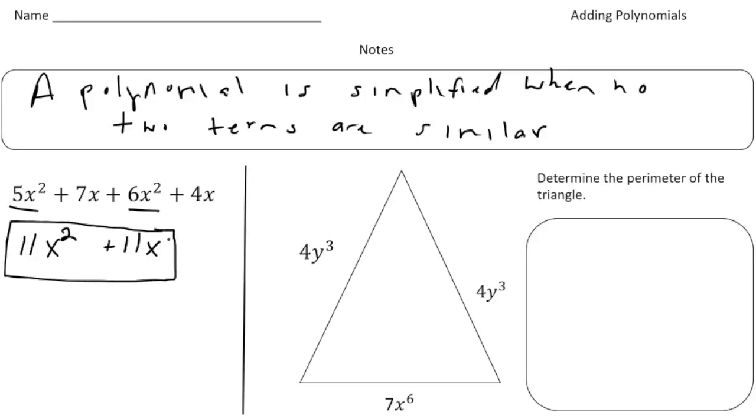The next one we have the shape of a triangle, and we want to determine the perimeter of the triangle. So we need to basically first write an expression to get the perimeter. Remember, the perimeter is the distance around. So I'm going to add up the 4y³ plus this 4y³, and then finally this side, the 7x⁶.